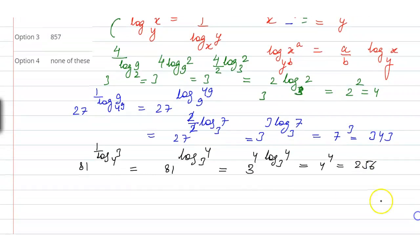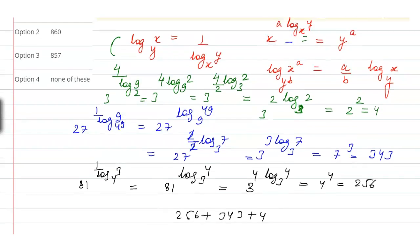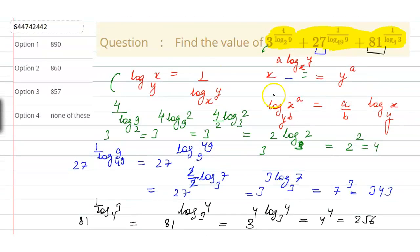So the final value of the expression is 256 plus 343 plus 4. Since no matching value appears in the options, we can say that none of these is the appropriate answer for the given problem.